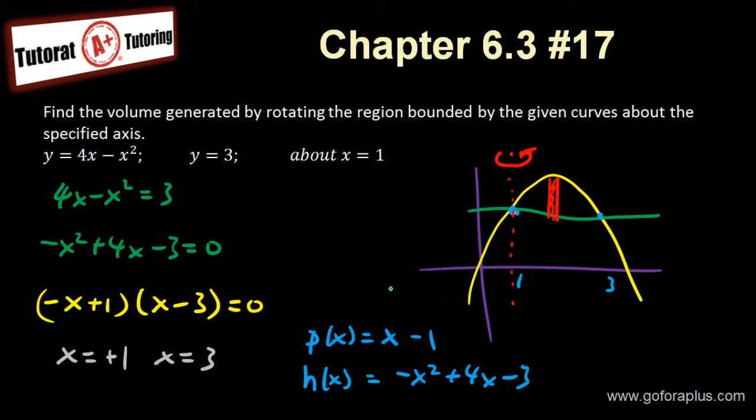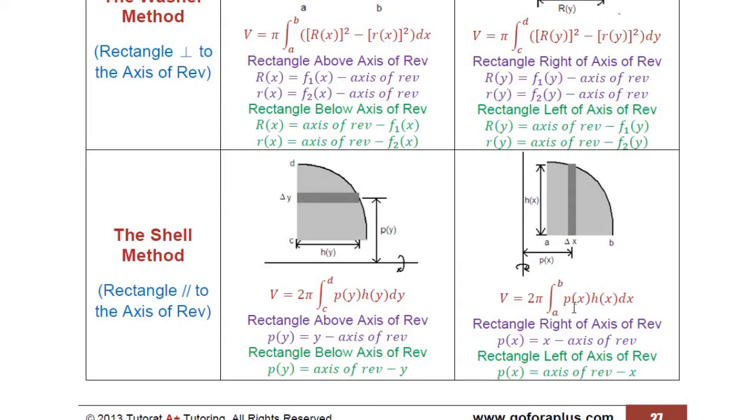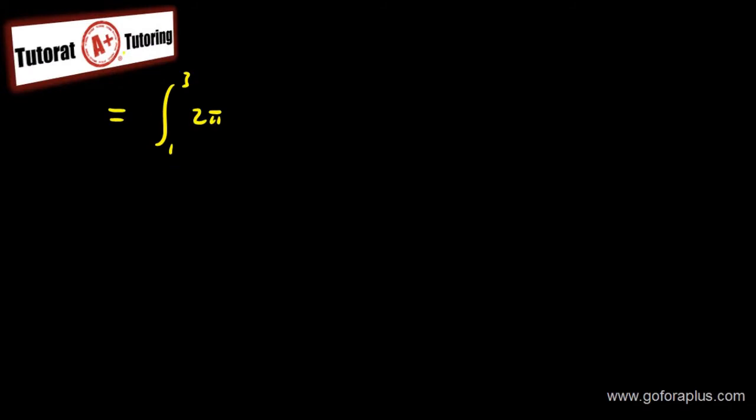Now, I can set up my equation now. My integral is from 1 to 3, 2 pi times p times h dx. So that's basically x minus 1 and minus x squared plus 4x minus 3 dx. So this is what I have here.